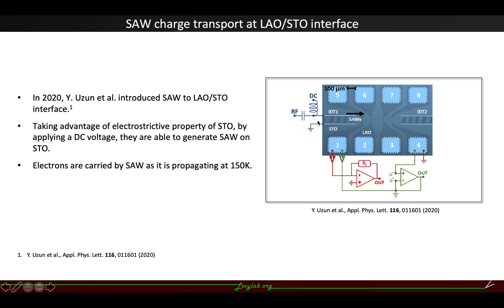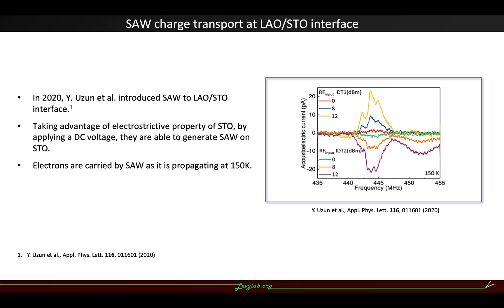By applying a DC voltage between the IDT leads, they are able to generate surface acoustic wave on STO, and electrons are carried by surface acoustic wave as it is propagating at 150 Kelvin.